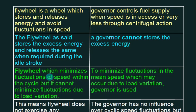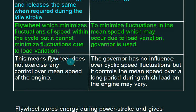The flywheel minimizes the fluctuation of speed within a cycle, but it cannot minimize fluctuation due to load variation. To minimize fluctuation in the engine which may occur due to load variation, the governor is used. This means the flywheel does not exercise any control over the mean speed of the engine, and the governor has no influence over cyclic speed fluctuation, but it controls the mean speed over a long period during which the load may vary.